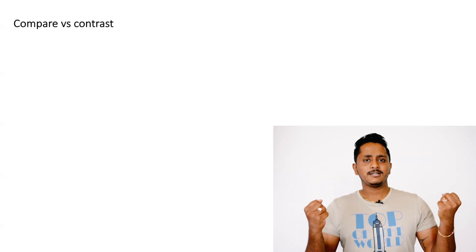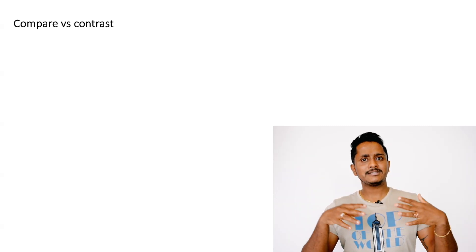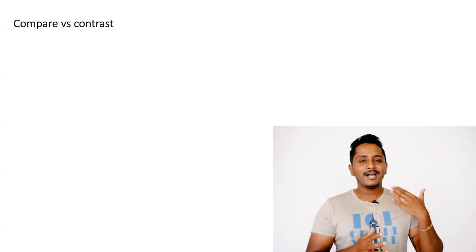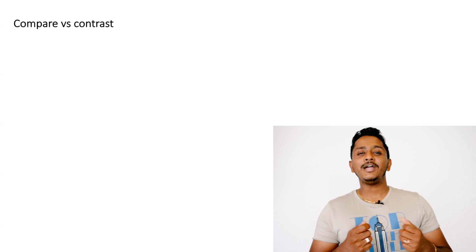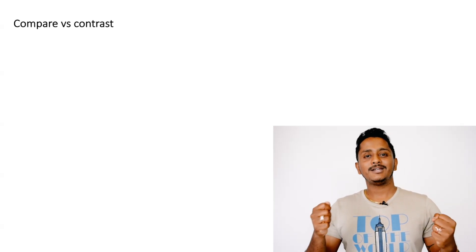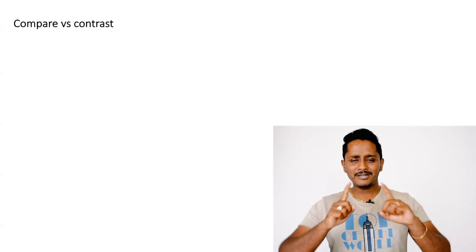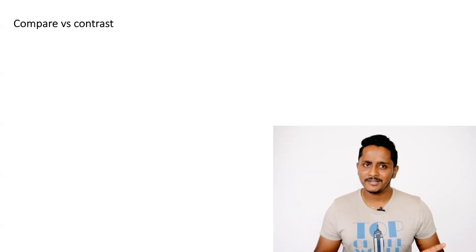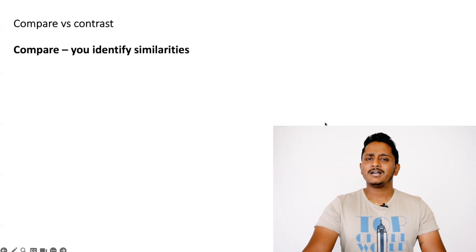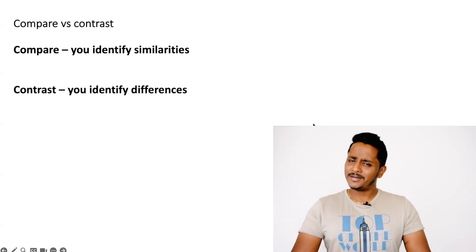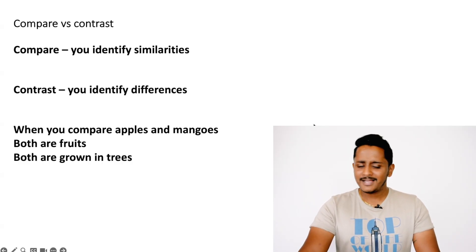Compare and contrast, to a lay person, looks similar, but they're entirely different. Of course, you need two entities to compare or to contrast. When you say you're comparing, you're trying to find what is common between them. When you're contrasting, you're trying to understand what differs them — what is different between them. Compare: you identify the similarities. Contrast: you identify the differences.